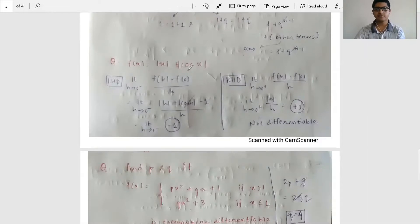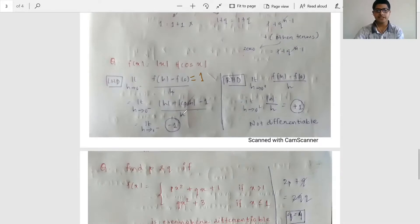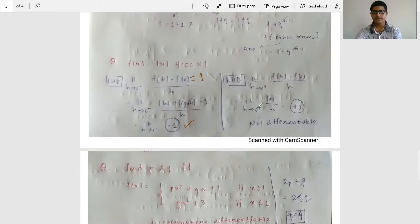Next: f(x) = |x| + |cos x| at x = 0. LHD = limit h→0⁻ of [f(h) − f(0)] / h = limit h→0⁻ of [|h| + |cos h| − 1] / h. As h→0, |cos h| → 1, so those terms cancel, leaving |h|/h → −1 (since h→0⁻). For RHD = limit h→0⁺ of [|h| + |cos h| − 1] / h, similarly |h|/h → +1. Since LHD = −1 ≠ +1 = RHD, f is not differentiable at x = 0.